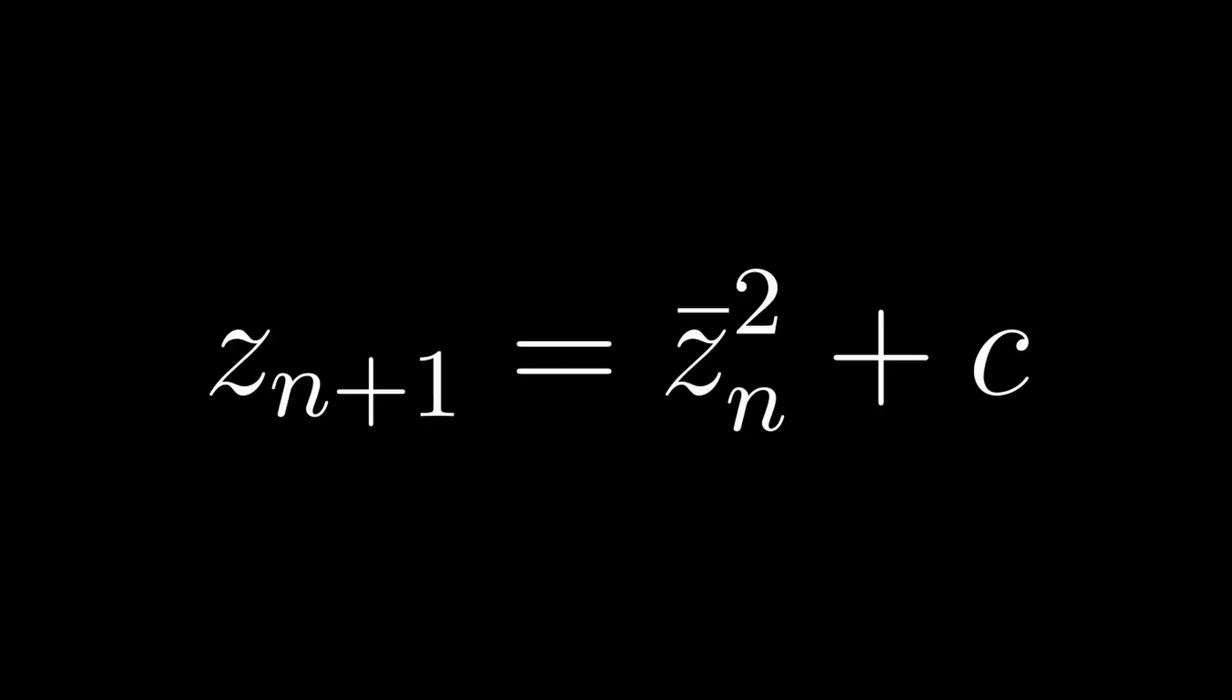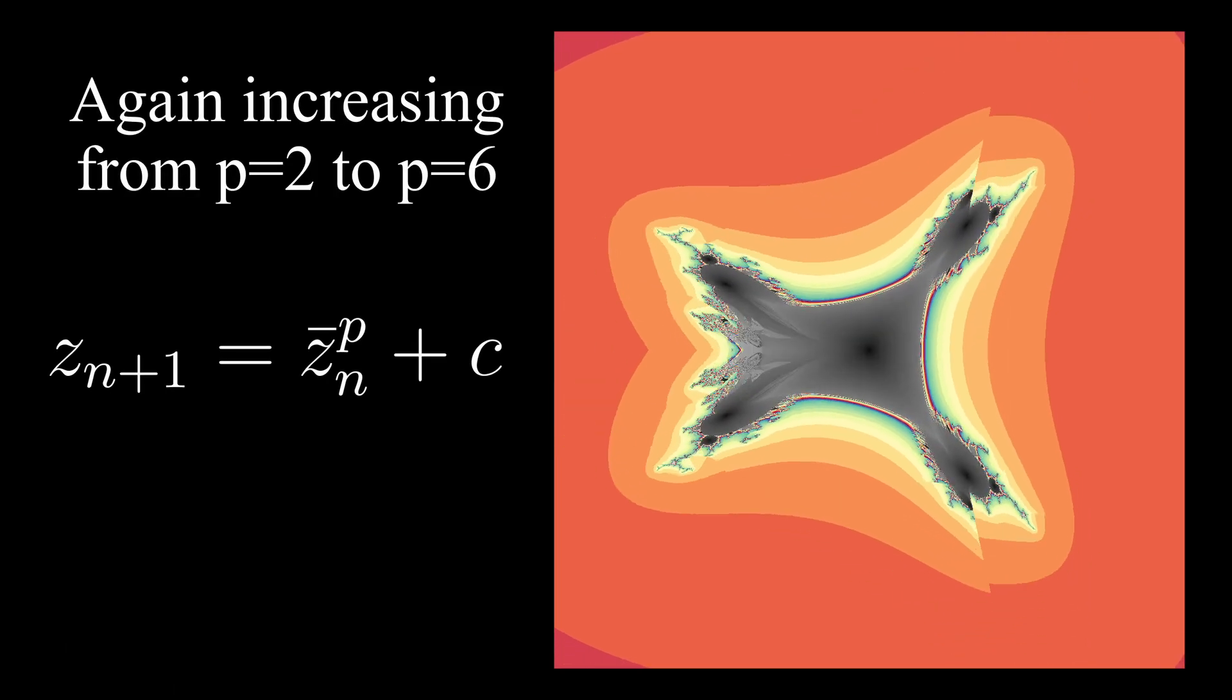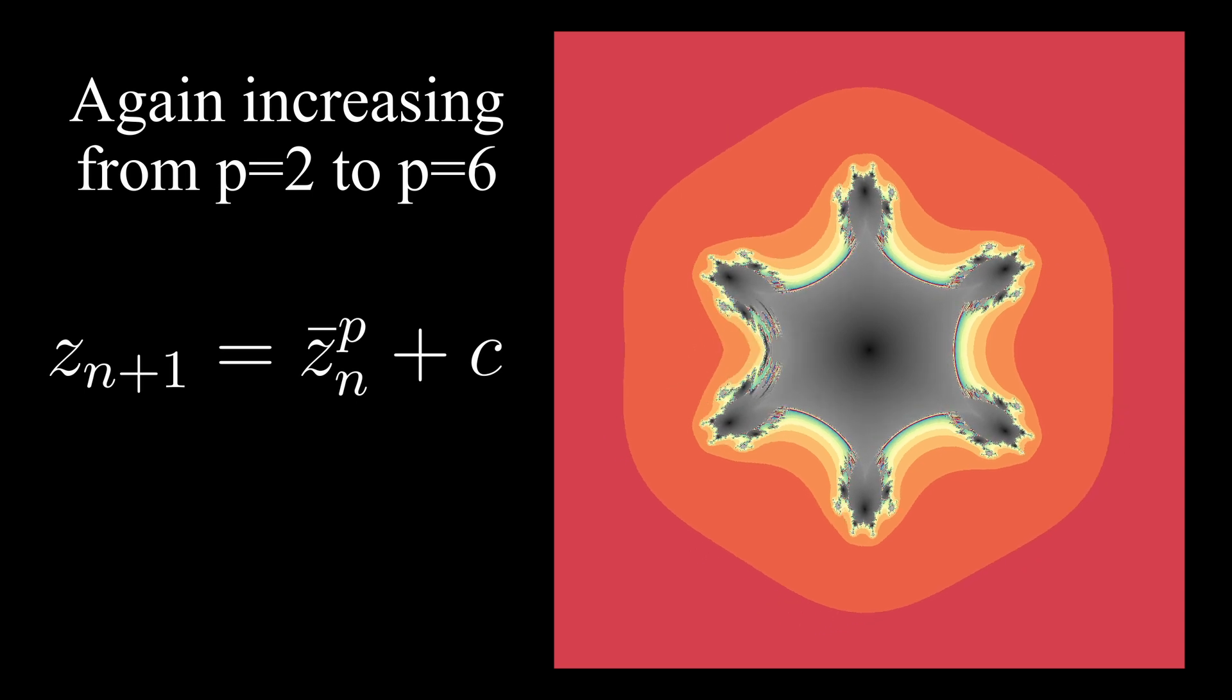Instead of using the normal z value, the complex conjugate can be taken instead, resulting in a new fractal, the Mandelbar or tricorn. As before, the powers can be increased as well, resulting in higher order versions, let's call them multibars. Sure, why not?